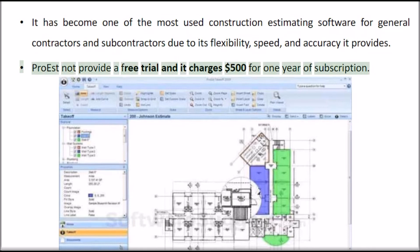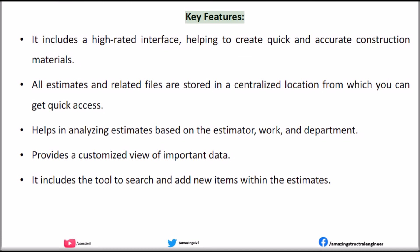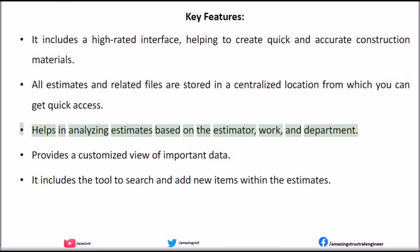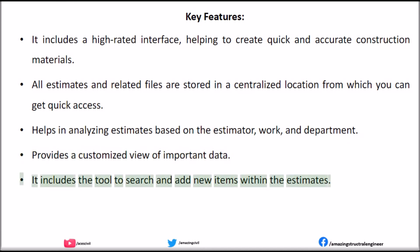ProEST does not provide a free trial and charges $500 for one year of subscription. Key Features: Includes a high-rated interface helping to create quick and accurate construction materials. All estimates and related files are stored in a centralized location from which you can get quick access. Helps in analyzing estimates based on the estimator, work, and department. Provides a customized view of important data. Includes the tool to search and add new items within the estimates.